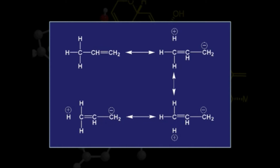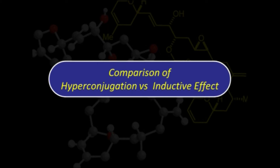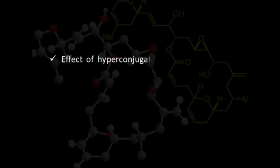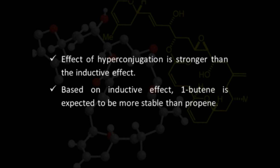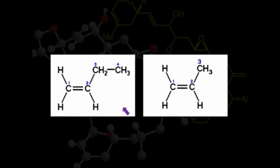If we compare hyperconjugation with inductive effect, we find that the effect of hyperconjugation is stronger than the effect of inductive effect. On the basis of inductive effect, we would expect 1-butene to be more stable than propene. We can see that 1-butene has an ethyl group and propene has a methyl substituent, and the ethyl group shows a stronger inductive effect than the methyl group.